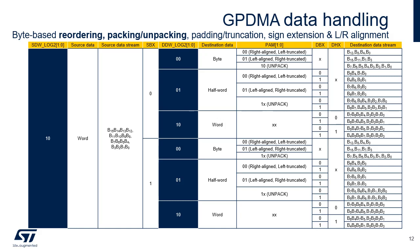If SBX is equal to 1 and the source data width is a word, the two bytes of the unaligned half word at the middle of each source data word are exchanged. For instance, bytes 7, 6, 5, 4 become bytes 7, 5, 6, 4. If the destination data width is larger than the source data width, the post-SBX source data is either right aligned and padded with zeros, or sign extended up to the destination data width, or is FIFO queued and packed up to the destination data width. If the destination data width is lower than the source data width, the post-SBX data is either right aligned and left truncated, or is FIFO queued and unpacked and streamed down to the destination data width.